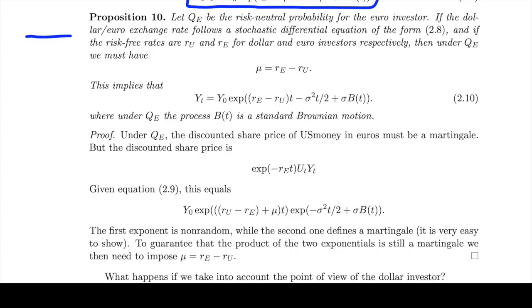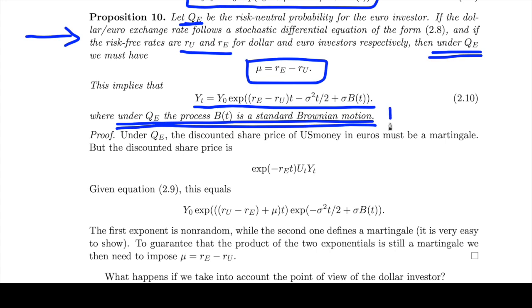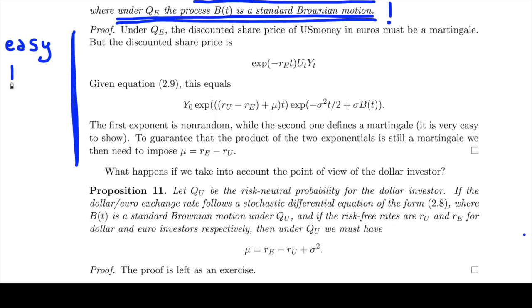Let Q_E be the risk-neutral probability for the euro investor. If the dollar-euro exchange rate follows a stochastic differential equation of the form of equation 2.8 — Merton's model — and if the risk-free rates are RU and RE for dollar and euro investors respectively, then under Q_E, the risk-neutral measure for the euro investor, we have that mu needs to equal the difference RE minus RU. This also implies that we can express Y_T as per equation 2.10, and under Q_E the process B_T is a standard Brownian motion. The proof of this proposition is simple but very important, because it allows us to see the Cameron-Martin theorem in practice.